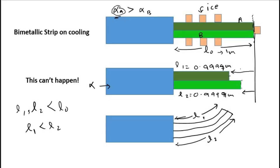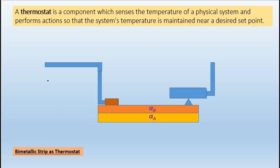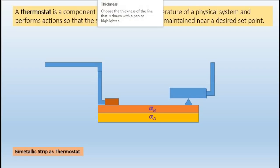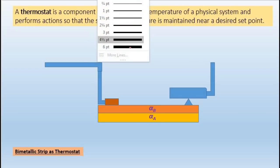Now let us understand the use of the bimetallic strip — it is used as a thermostat.